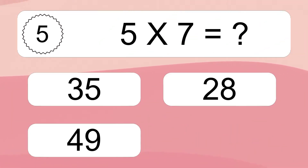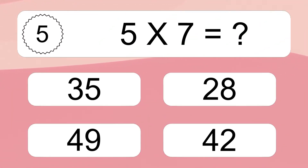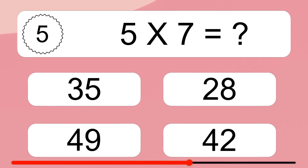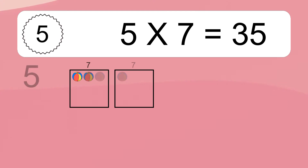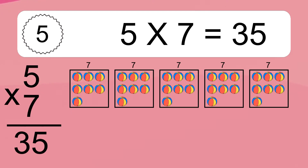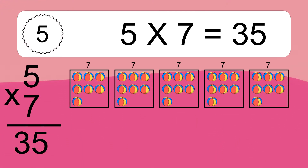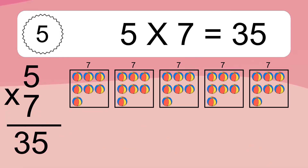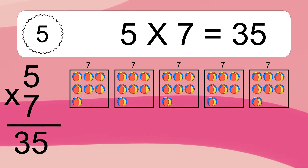5 times 7 equals what? 5 times 7 equals 35.